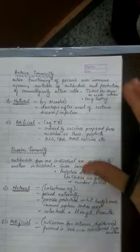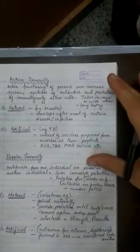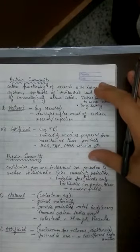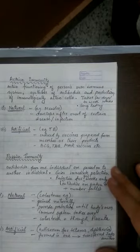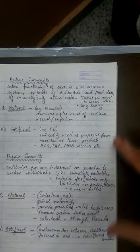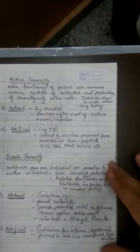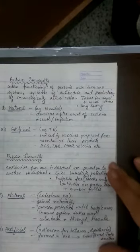So this is how active immunity is different from the passive immunity. This is immunity in which the body's own immune system will function. Here there is no participation of the body's immune system. This may take a lot of time to start functioning. This will be a quick one to work but this will be a long lasting one and this will be for a short duration of time. I hope the differences between active and passive is clear to you.